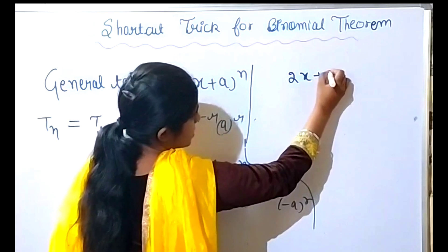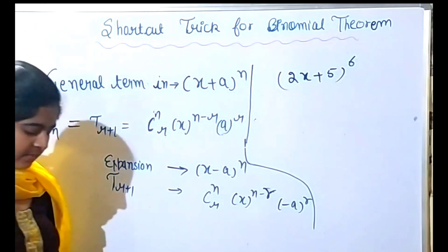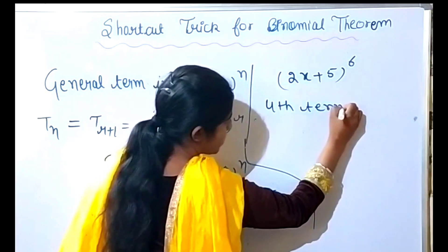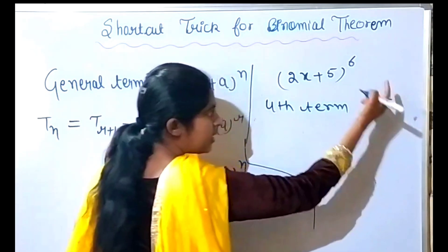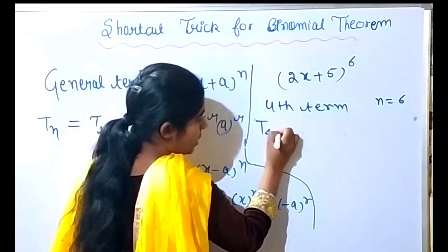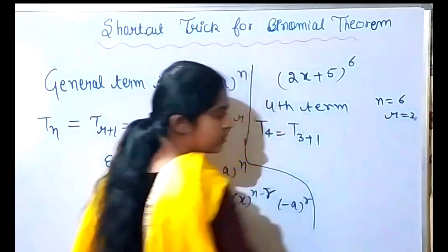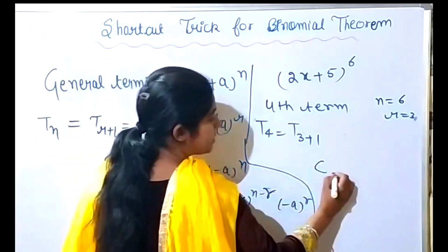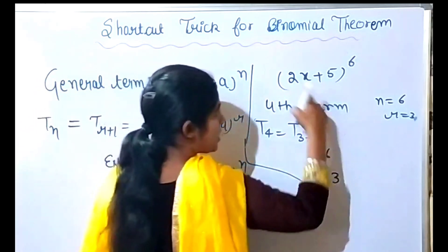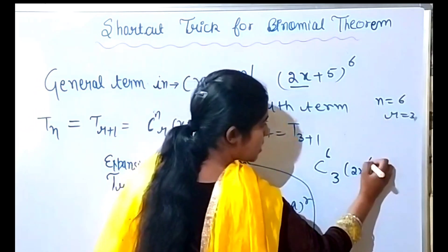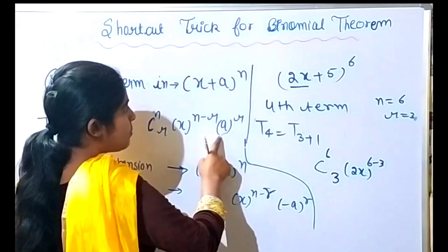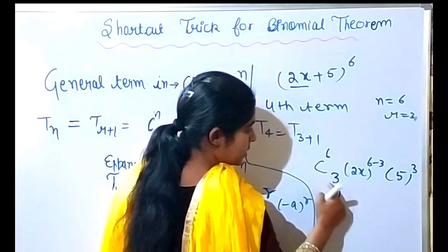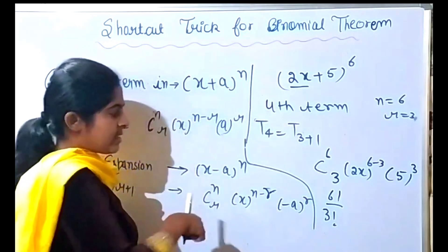For example, consider (2x + 5) to the power 6. I have to find the fourth term. This is very easy. First, n is 6. T4 means r is 3, because T(r+1) = T4, so r = 3. Apply the formula: C(6, 3) · (2x)^(n-r) · 5^r, which is C(6, 3) · (2x)^3 · 5^3.